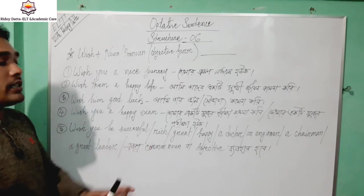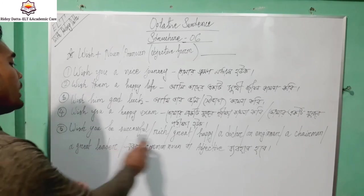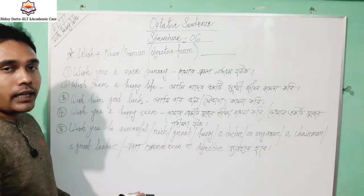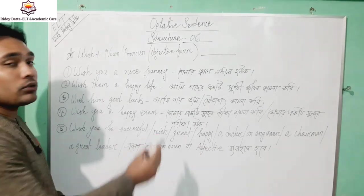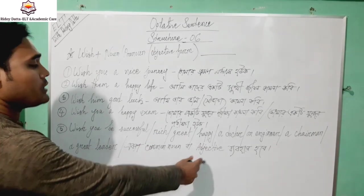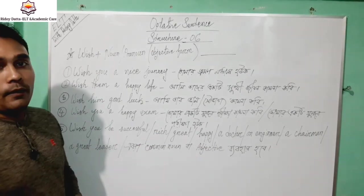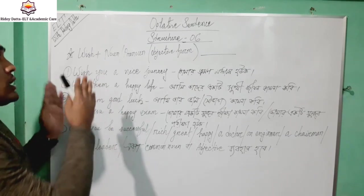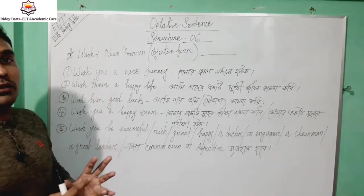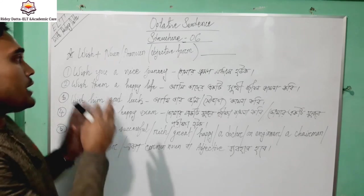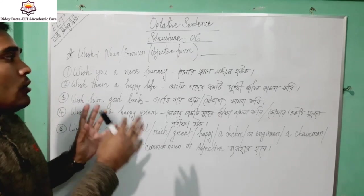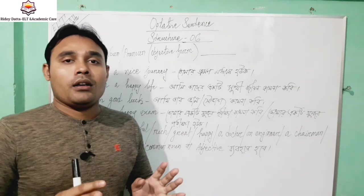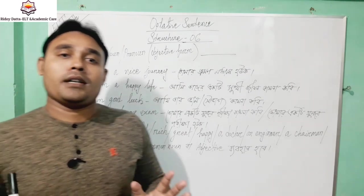So we have a common noun without adjective, and a common noun with a variable line. We use this type of settlement, and in this type of settlement we use the piggyback.